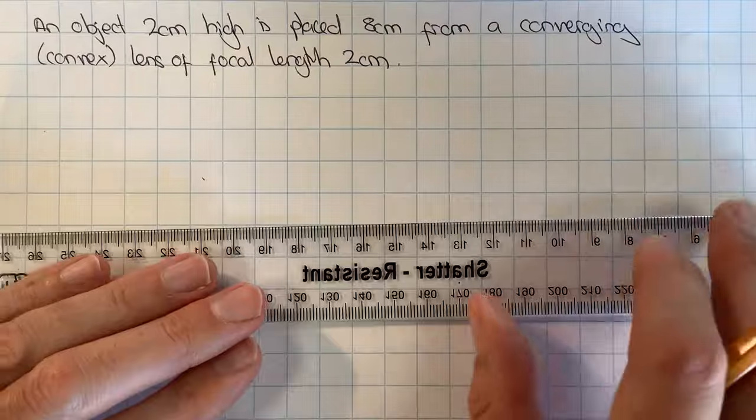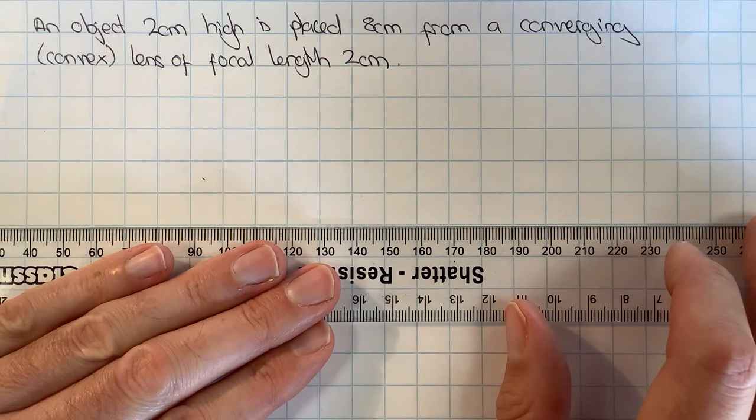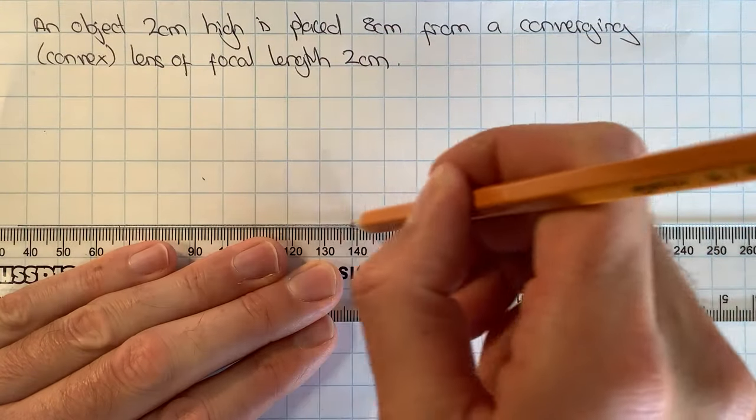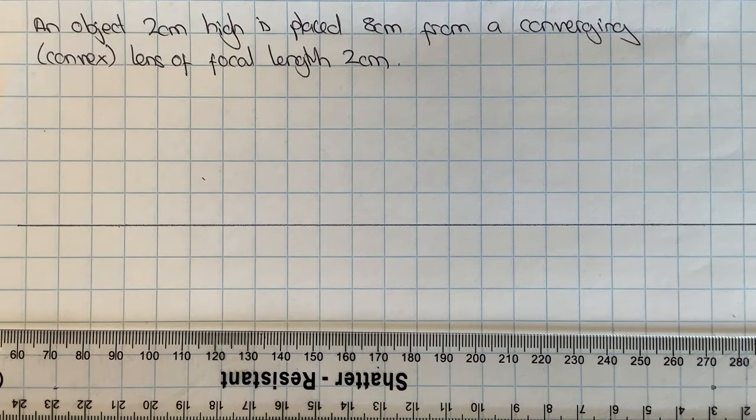The first thing I'm going to do is draw in what is called the principal axis, which is just a horizontal line on my piece of paper, and I'm going to do that on top of some of the squares like that.